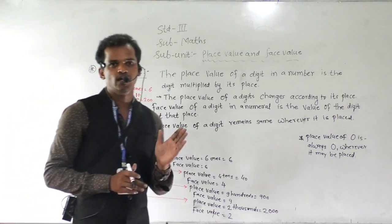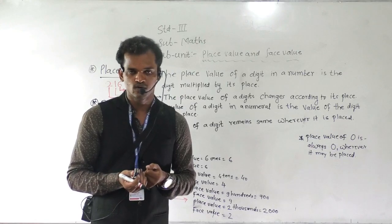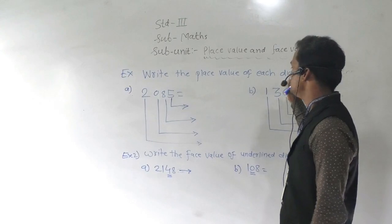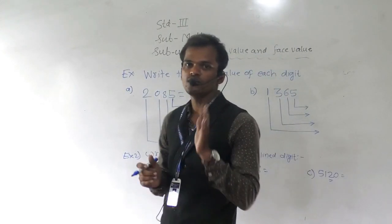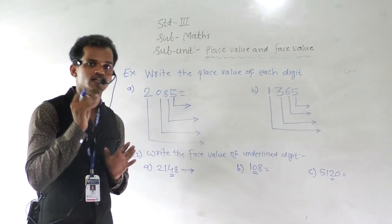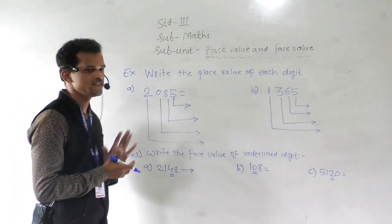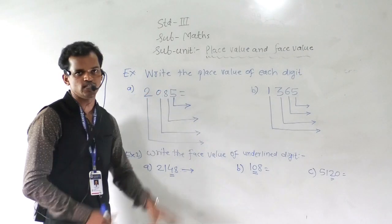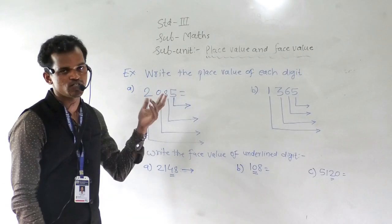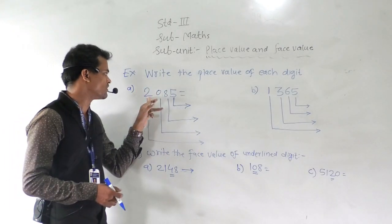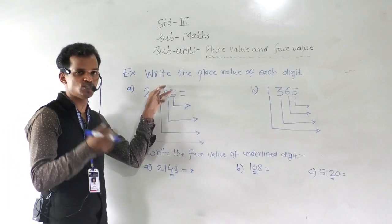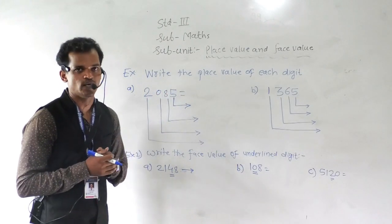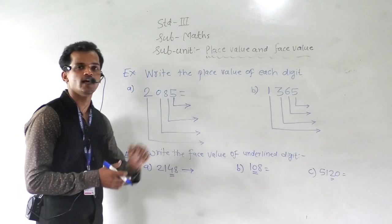So we have covered place value and face value. Now let's see some examples. Write the place value of each digit. This is a 4-digit number: 2085. So 4-digit numbers start with thousands. We have 2000, 0 hundreds, 8 tens, and 5 ones. So we write this number as 2085.